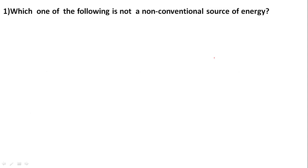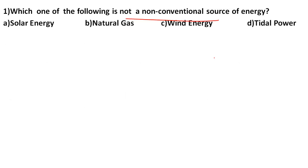First question: which one of the following is NOT a non-conventional source of energy? Options are: solar energy, natural gas, wind energy, and tidal power. Natural gas is a conventional source of energy. Conventional sources are traditional/old sources, while non-conventional sources are newer renewable alternatives.